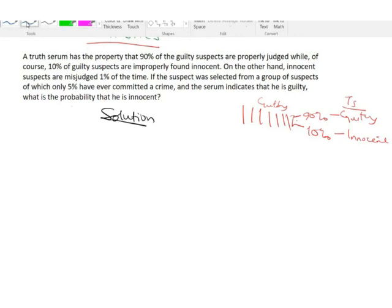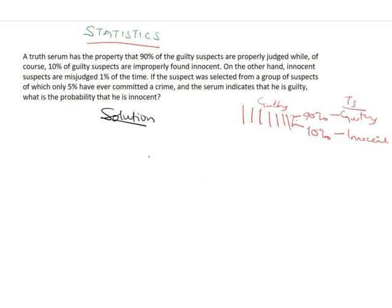The other part of the question concerns innocent suspects. There are suspects who are actually innocent. Innocent suspects are misjudged 1% of the time — the truth serum says they are guilty while they are actually innocent. The remaining 99% are innocent and the truth serum properly found them to be innocent.